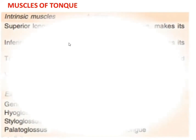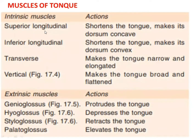Then we will see what are the muscles of the tongue. There are two parts: the intrinsic muscles and the extrinsic muscles. Under the intrinsic muscles there are superior longitudinal, inferior longitudinal, transverse, and vertical muscles. The main action of these muscles is to maintain the shape of the tongue.